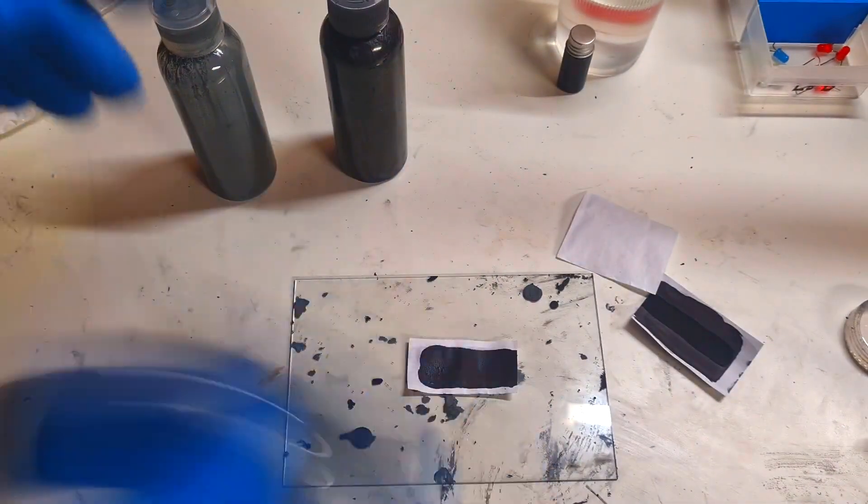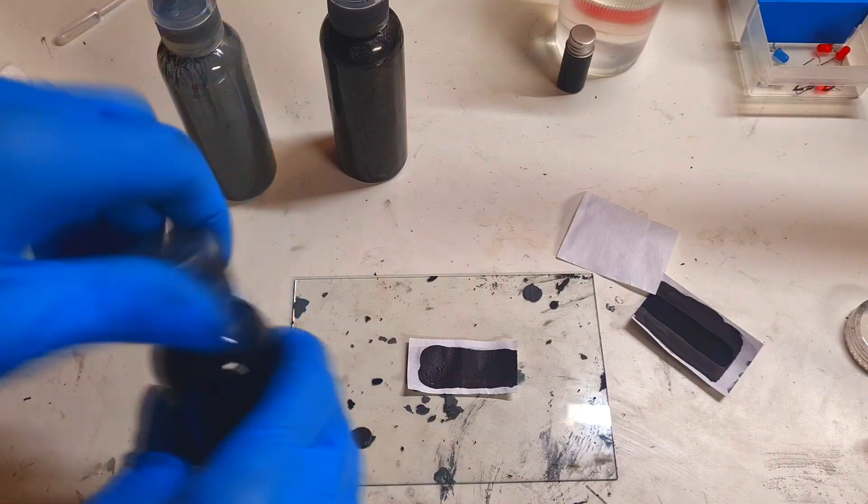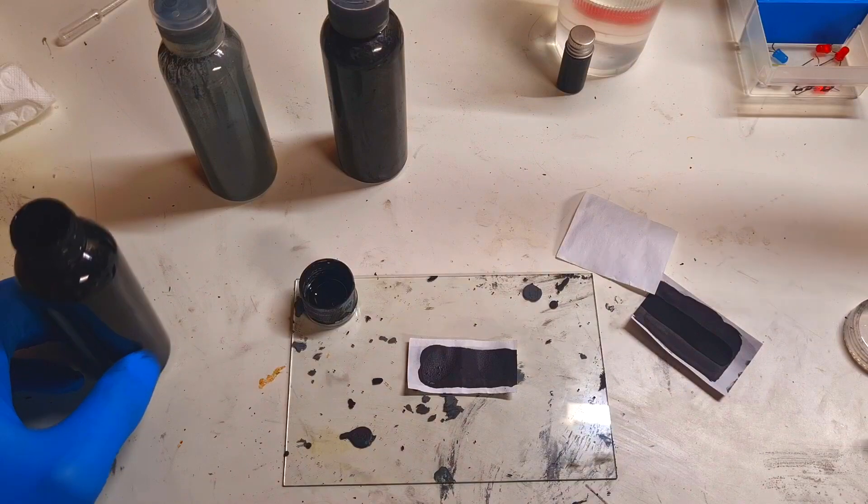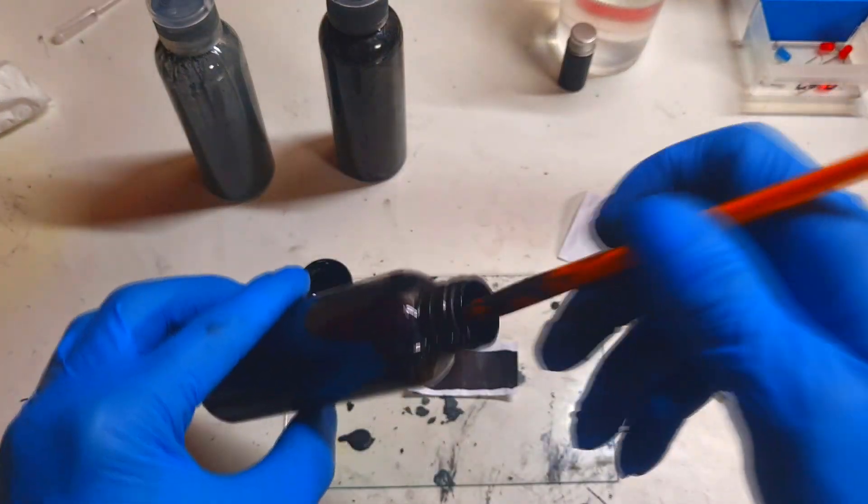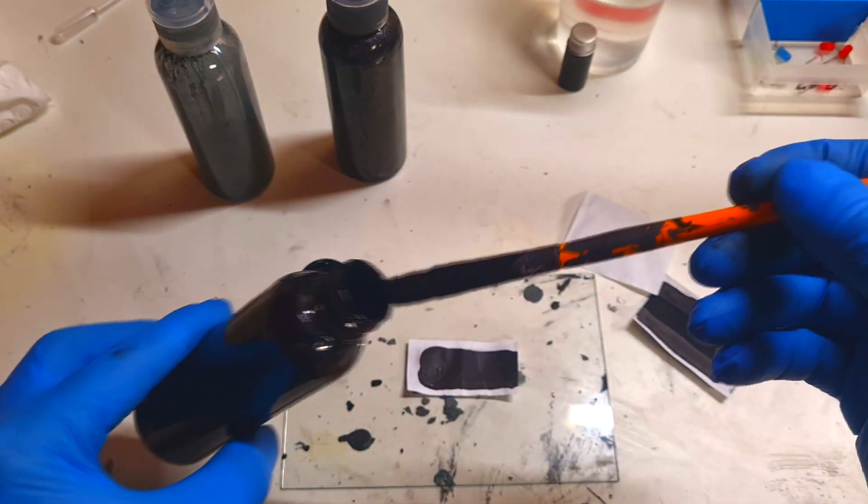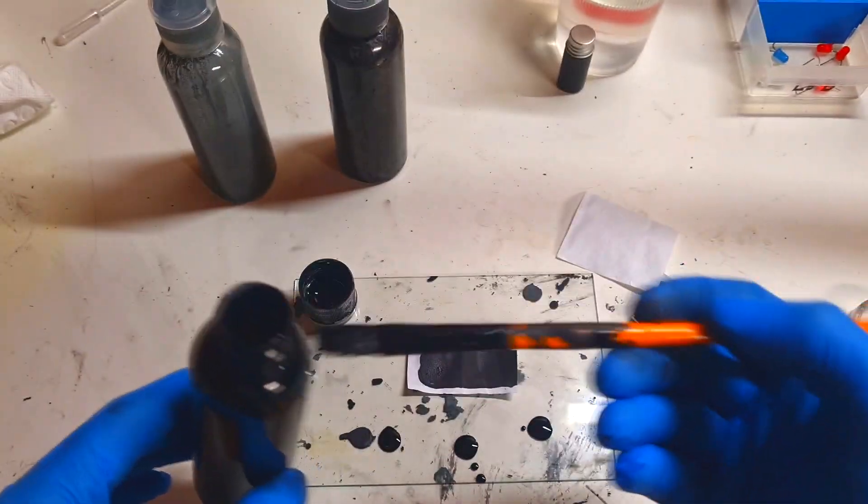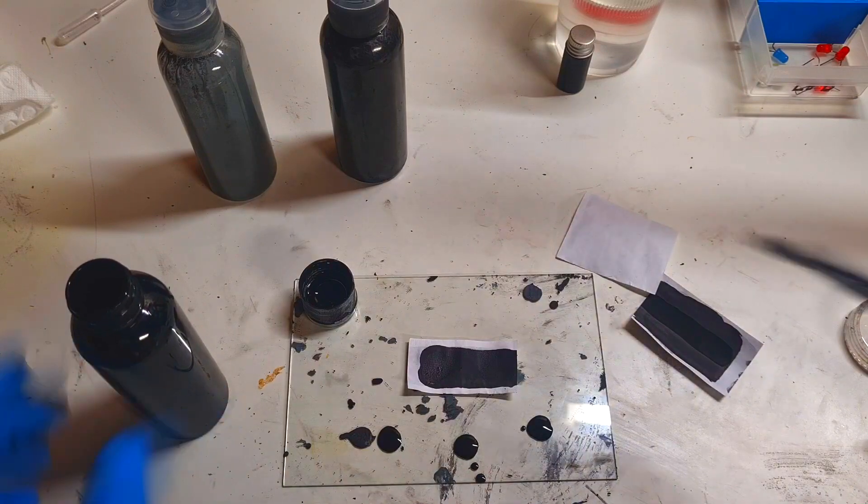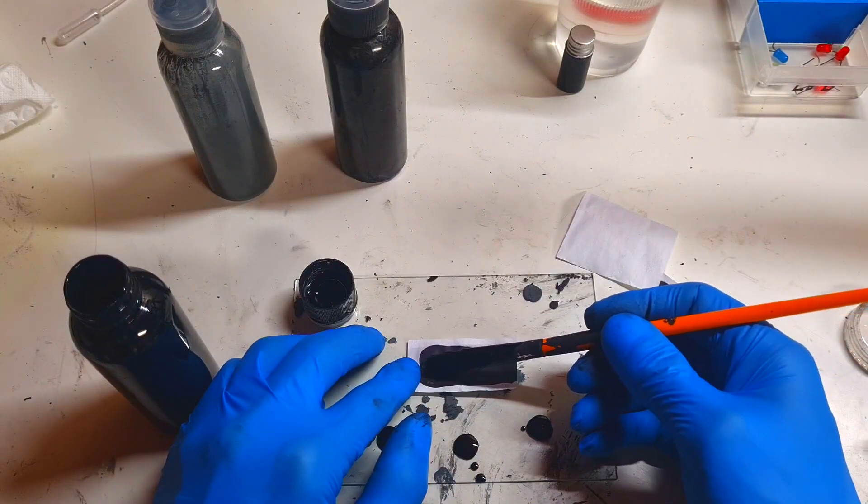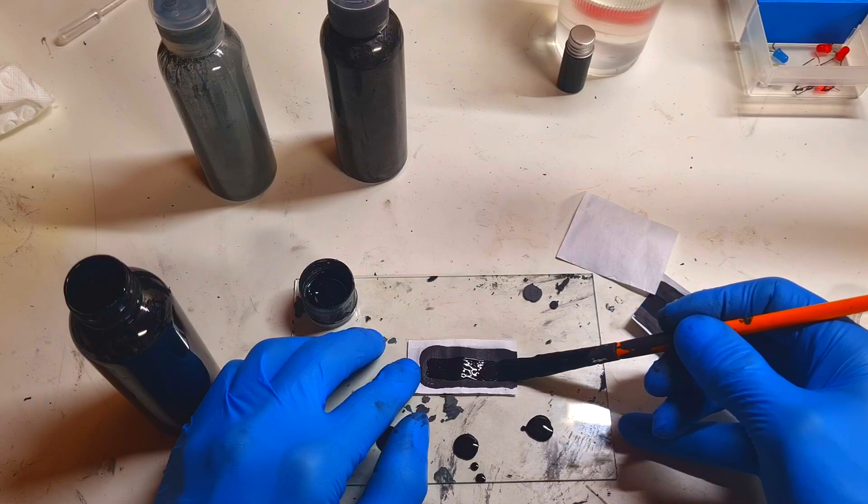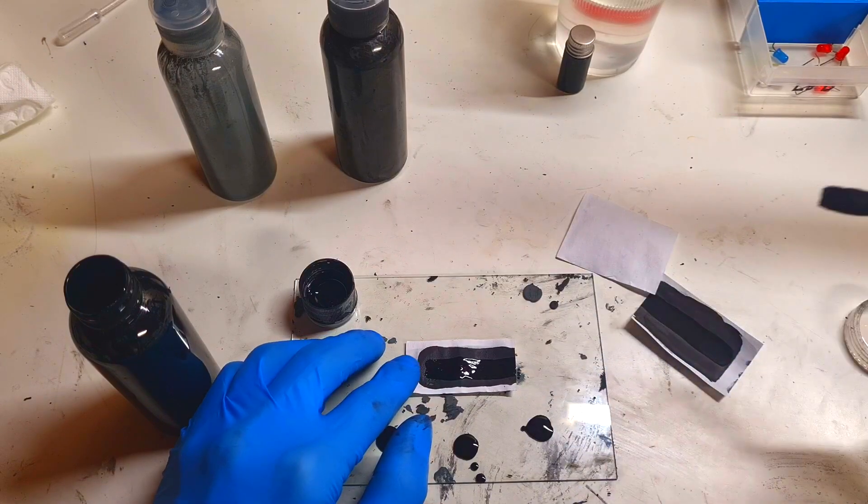And finally the current collector ink. I will apply this current collector ink only on the positive side, because on the negative side you already used some metallic zinc, and that's it.